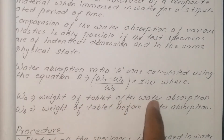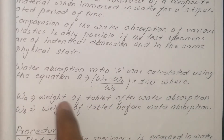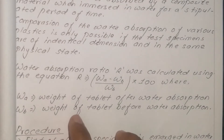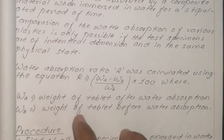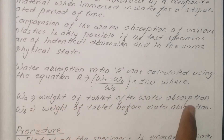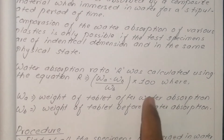W_A is the weight of the brick after water absorption. W_B is the weight of the brick before water absorption — i.e., the dry weight.